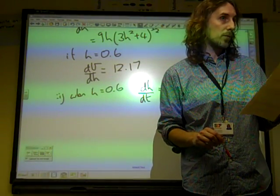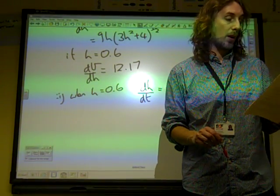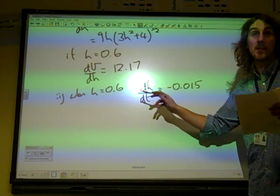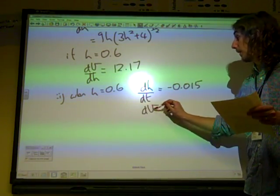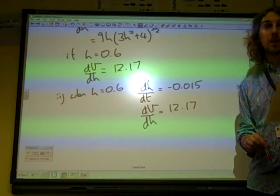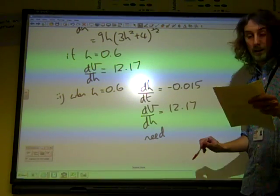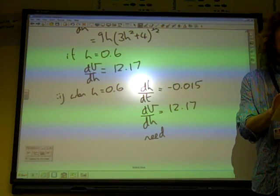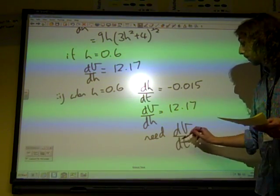We're supposed to find the rate at which the volume is decreasing at the instant when its depth is 0.6. So that's the rate of decrease of the height. We already know that dv by dh at that instant is 12.17. And we need to find the rate at which the volume is decreasing. So dv by dt.